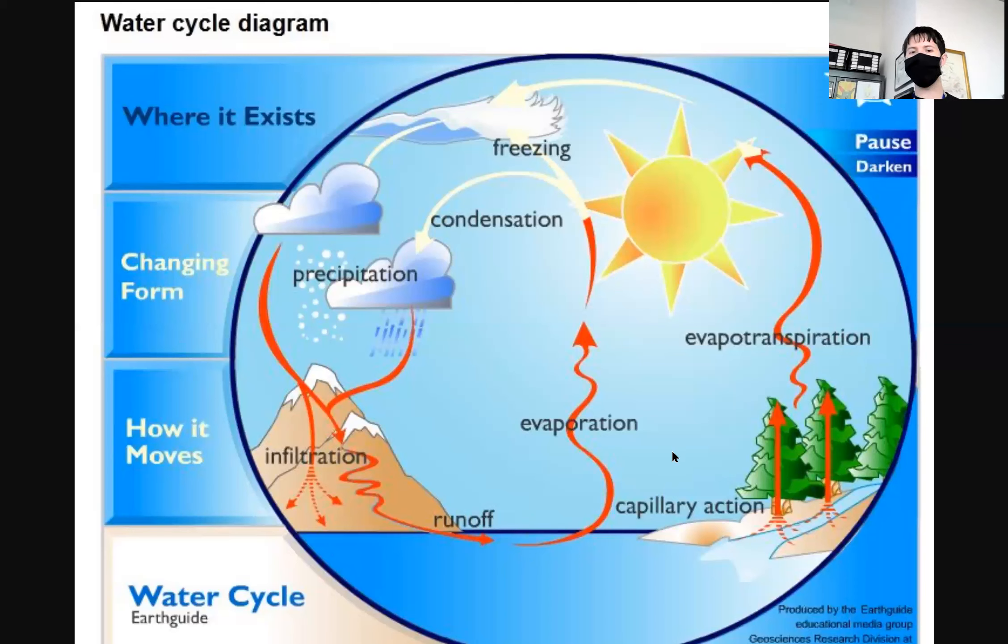So the six main steps of the water cycle we went over were evaporation, transpiration, condensation, precipitation, infiltration, and runoff. You guys have questions about what those mean?